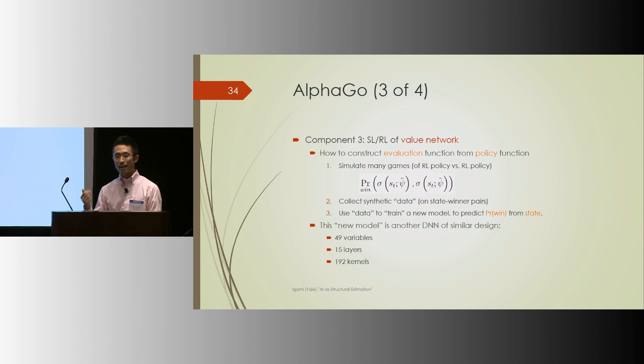In principle, that reinforcement learned policy network or policy function should be able to beat any humans, if it works well. But the development team moved on to construct the third component anyway, value network. Here's what they did. One, simulate many games by letting the policy functions play against each other. Step two, these simulations generate data of many games and the identity of the winner and loser. Step three, these synthetic data can be then used to train a new model to predict the winning probability as a function of the current state.